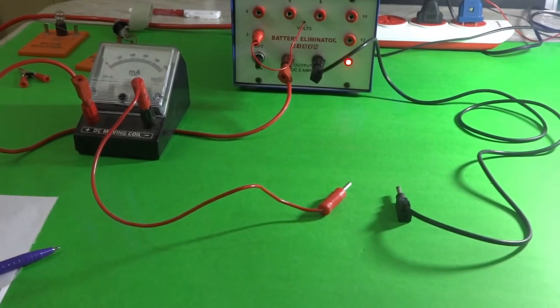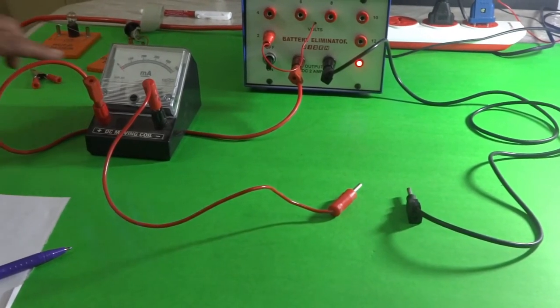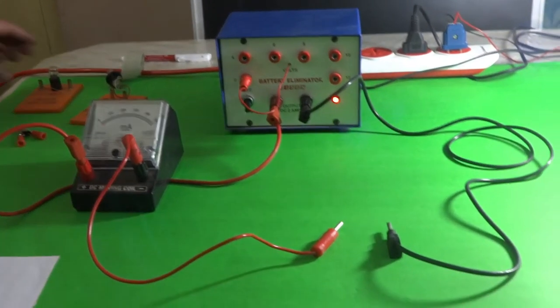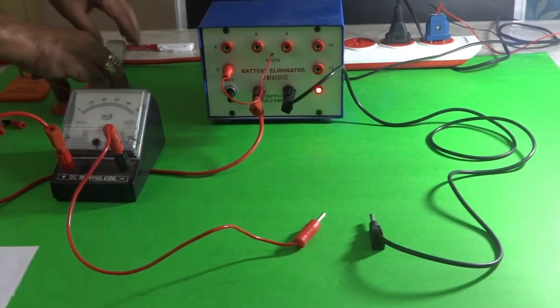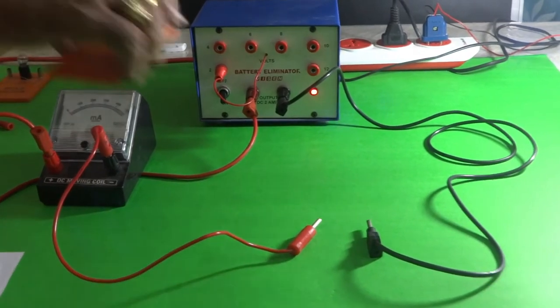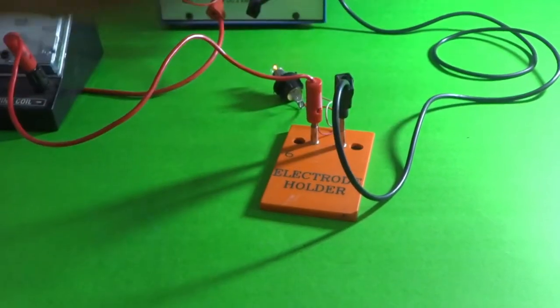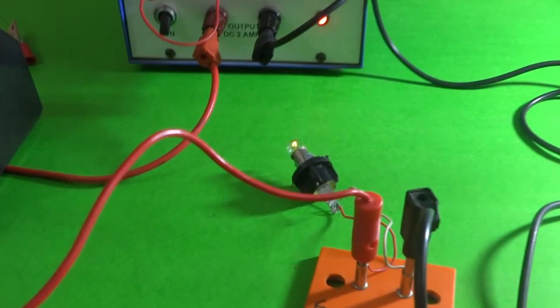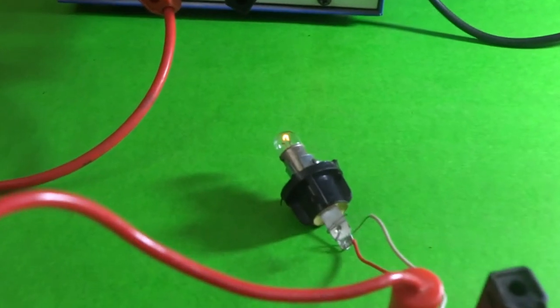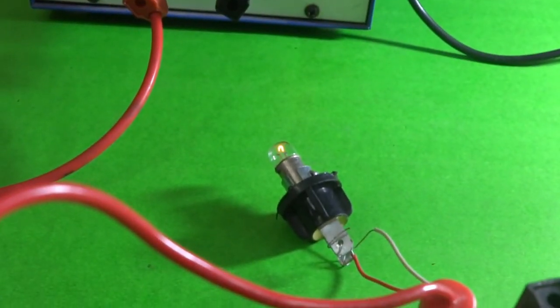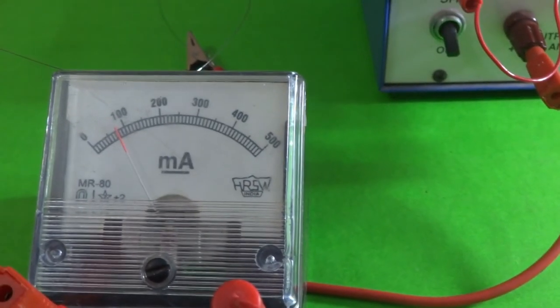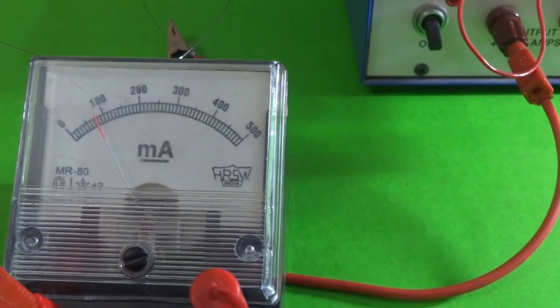Now we will see what are the corresponding readings obtained in milliamps. First, let us connect. Now you can see the bulb glows with very low intensity, and here the milliammeter is showing around 90 mA.